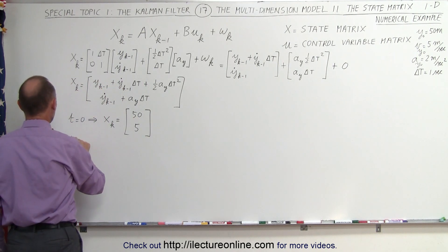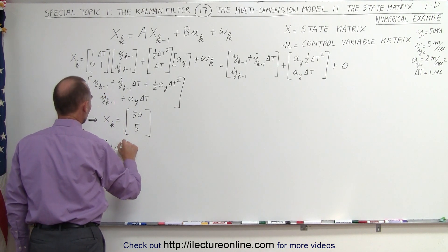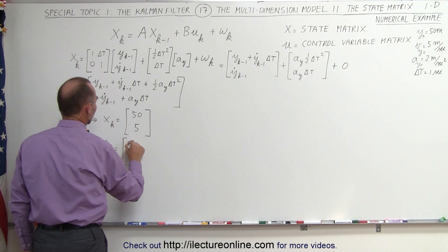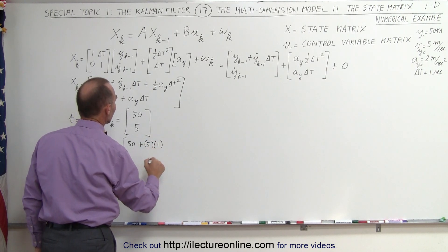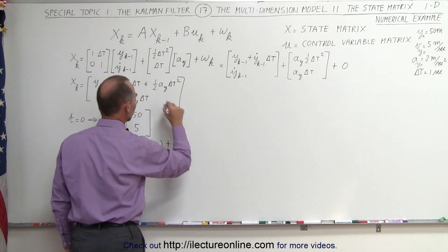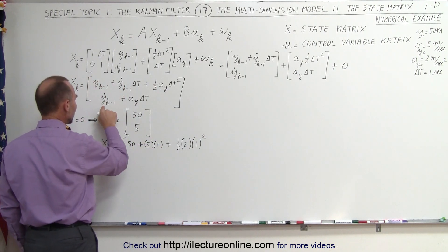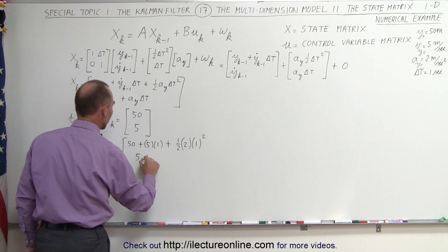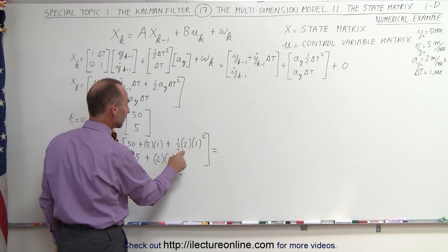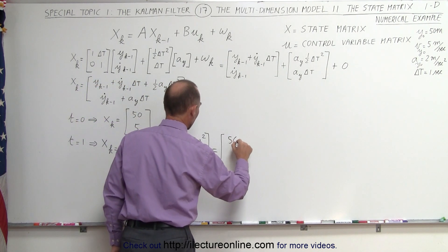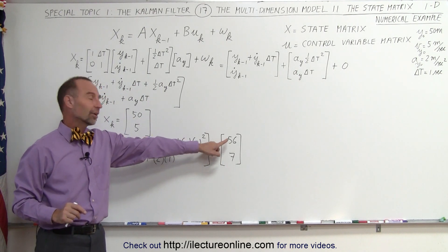After one time interval, time equals 1. The new state matrix X sub K is going to be equal to the previous position, which is 50, plus the velocity multiplied times the time interval — so plus 5 times 1 — plus one half times acceleration (which is 2) times the delta T quantity squared (so 1 squared). For the velocity, we have the previous velocity, which is 5, plus the acceleration (2) times delta T (1). Adding it up: 50 plus 5 is 55, plus 1 is 56 for the position. And for the velocity, 5 plus 2 is 7. So the position and velocity are now 56 meters and 7 meters per second.